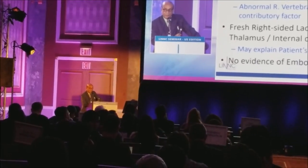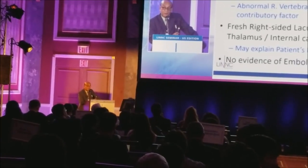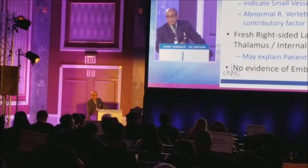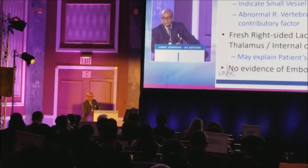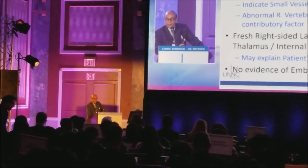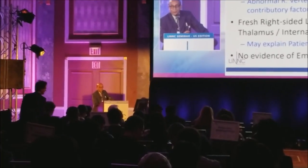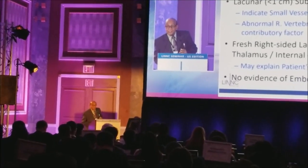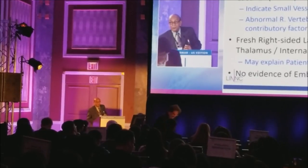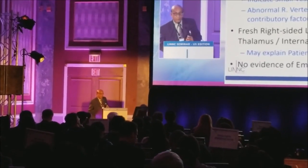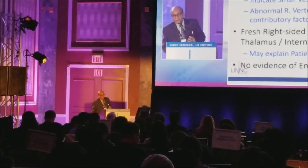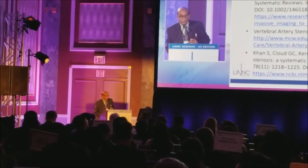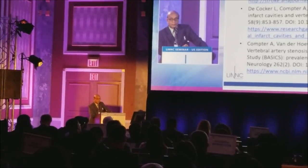As we saw in the first pictures — the fast gradient recall echo acquisition images — what we postulated was that perhaps the abnormal right vertebral circulation: the narrow right vertebral artery, the bifid right vertebral artery, the accessory right vertebral artery with its abnormal communication, may have been a cause of this small vessel disease problem on the right side. And this fresh episode may have been a fresh episode of small vessel disease, which may explain the left-sided patient's findings. He obviously did not have any evidence of embolic or large artery strokes. So these are my literature reviews, and thank you very much for watching.